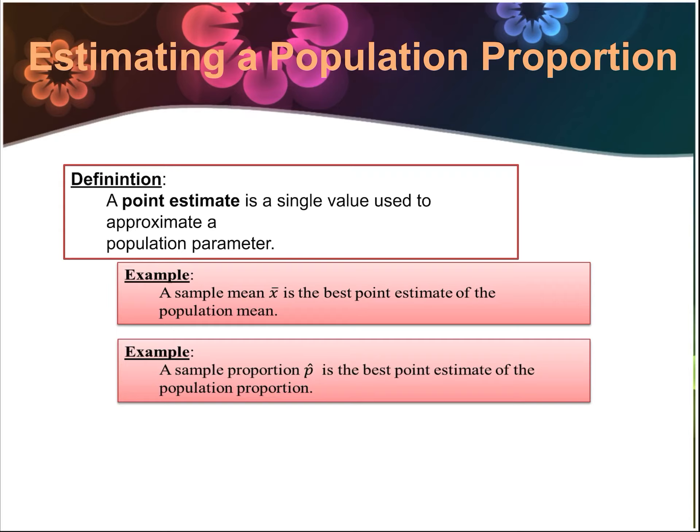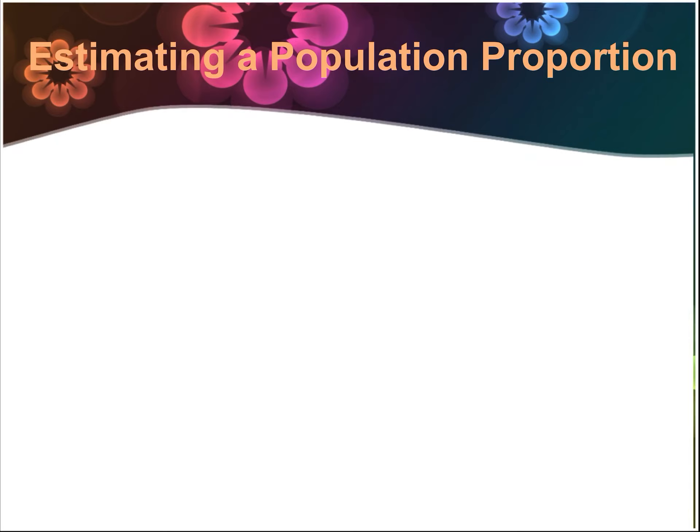A sample proportion — we use p-hat to show it's coming from a smaller sample — is the best point estimate of the population proportion. So the sample mean best approximates the population mean, and the sample proportion best approximates the population proportion.